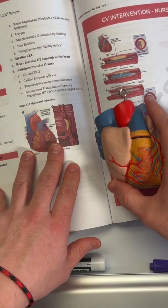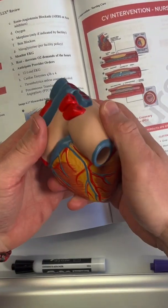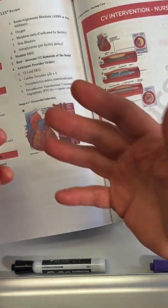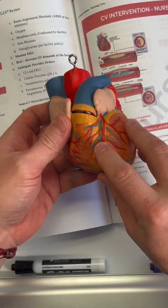Angina is chest pain that results from inadequate blood flow. Myocardial infarction on the other hand is more serious - it's when a portion of the heart is receiving no oxygen-rich blood at all, and it's often because of blockage to one of these main vessels.